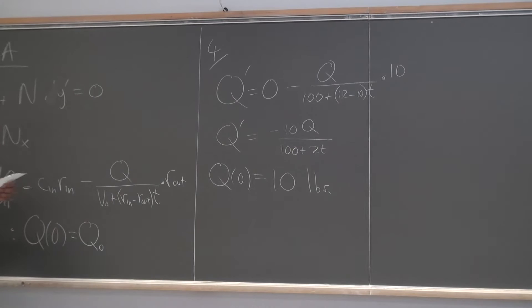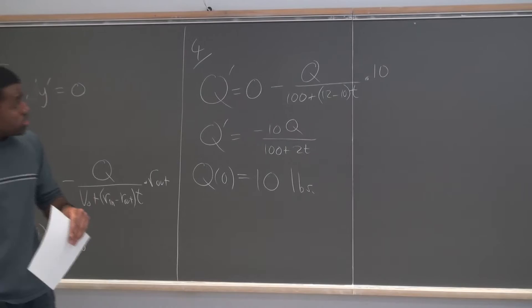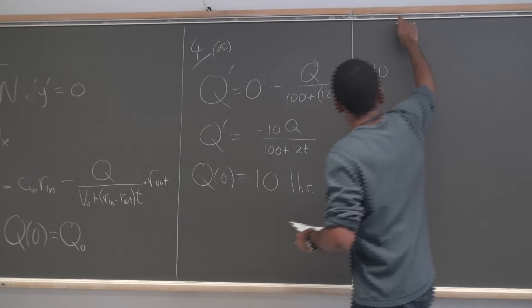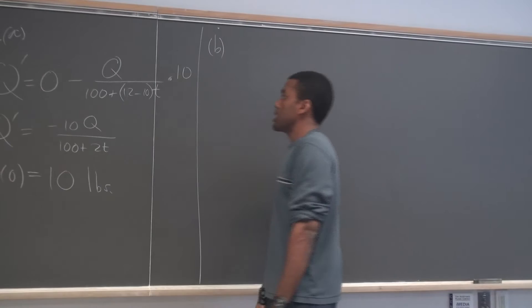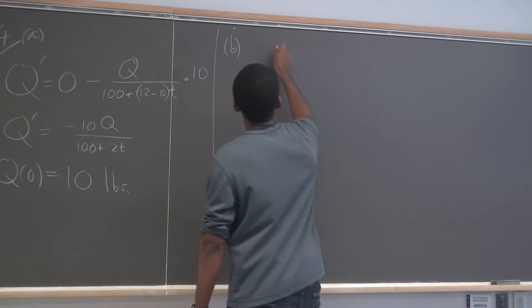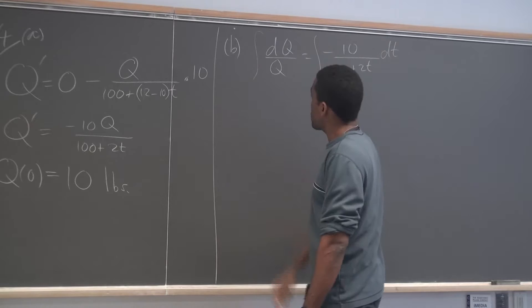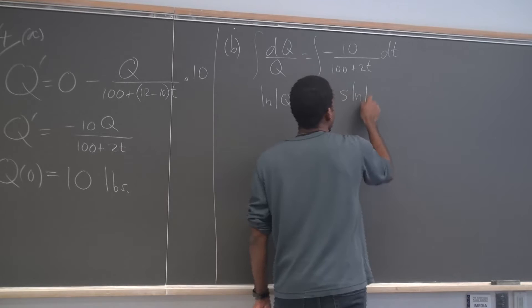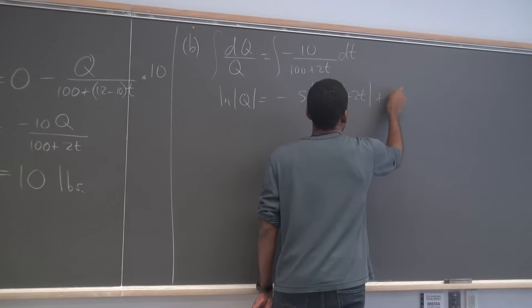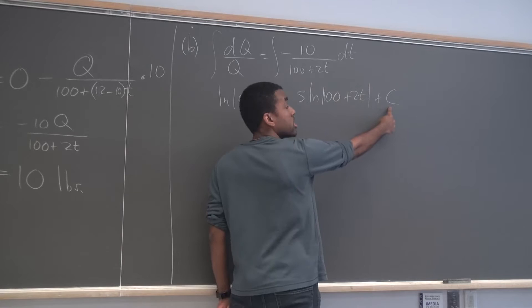You could write 10 pounds if you want — I didn't particularly care about units there. Now part b: find the general solution. What kind of equation is this? It's separable. I can write this as dQ/Q = -10/(100 + 2t) dt. Integrating both sides gives: ln Q = -5 ln(100 + 2t) + constant. Bringing the -5 up as a power and combining with the constant of integration by multiplication.